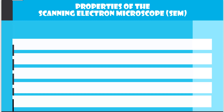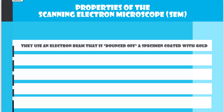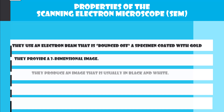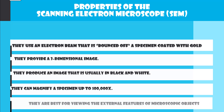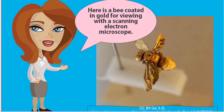Properties of the scanning electron microscope, or SEM: they use an electron beam that is bounced off a specimen coated with gold, they provide a three-dimensional image, they produce an image that is usually in black and white, they can magnify a specimen up to 100,000 times, and they are best for viewing the external features of microscopic objects. Here is a bee coated in gold for viewing with a scanning electron microscope.